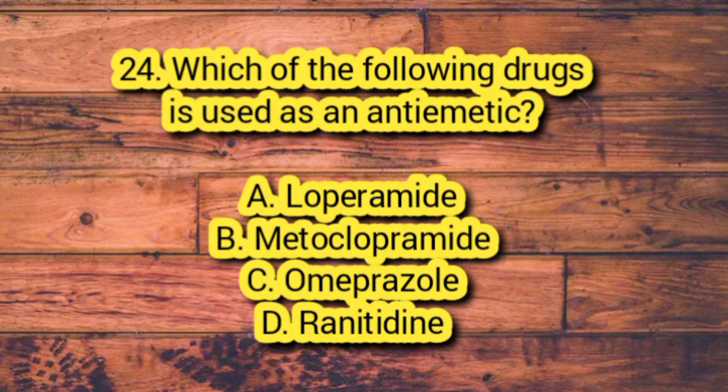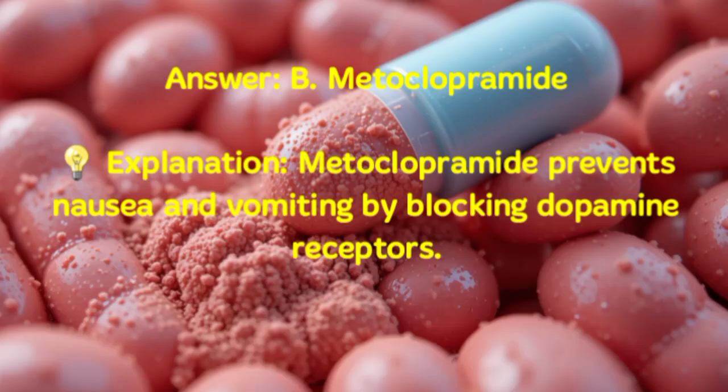Number 24. Which of the following drugs is used as an antiemetic? A. Loperamide. B. Metoclopramide. C. Omeprazole. D. Ranitidine. Answer: B. Metoclopramide. Explanation: Metoclopramide prevents nausea and vomiting by blocking dopamine receptors.